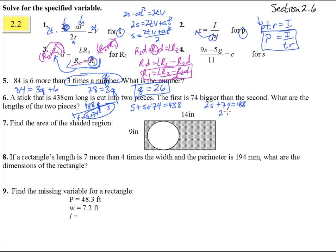Subtract 74 from both sides and we get 2S equals, if we take 438 minus 74, we get 364. Divide both sides by 2 and we get the small one is 182. Better put on here centimeters, that's what we're working with. 182 centimeters and the first one is 74 bigger than that. So we get 256 centimeters. So those are the lengths of the two pieces.